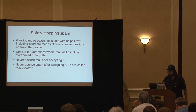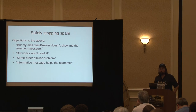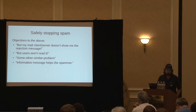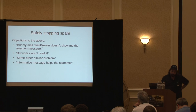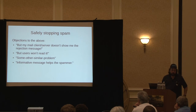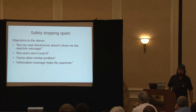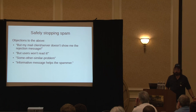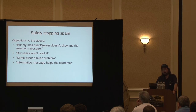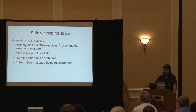There are some objections that can be raised to the points I mentioned. Mail clients like Microsoft try to hide the rejection message from the user — well, we can't do anything about that; we do the best we can. A lot of users will get the bounce and won't read it or won't understand it, and they won't think that the URL I give them is something to click on and read. But if they did read it, we helped them. Most objections are going to be like that.